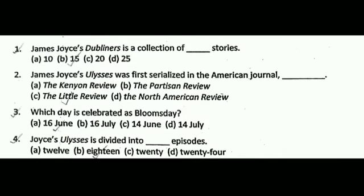Next question: James Joyce's Dubliners is a collection of blank stories. The correct answer is B, that is 15.